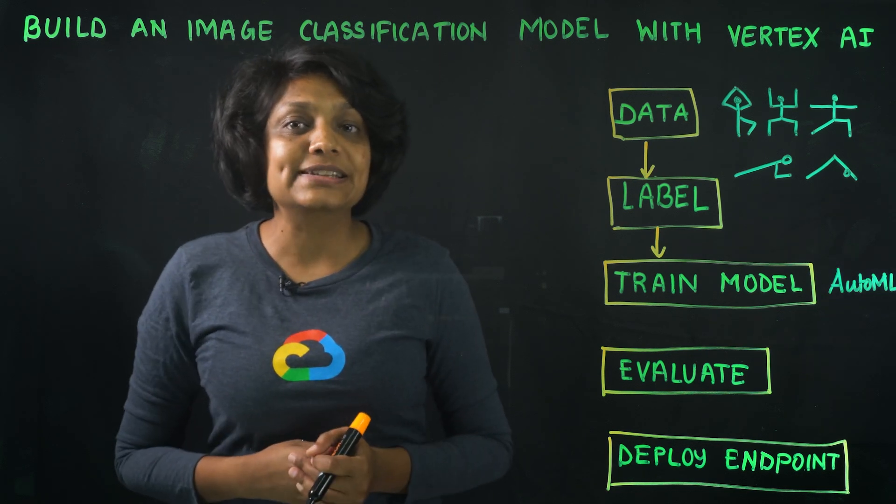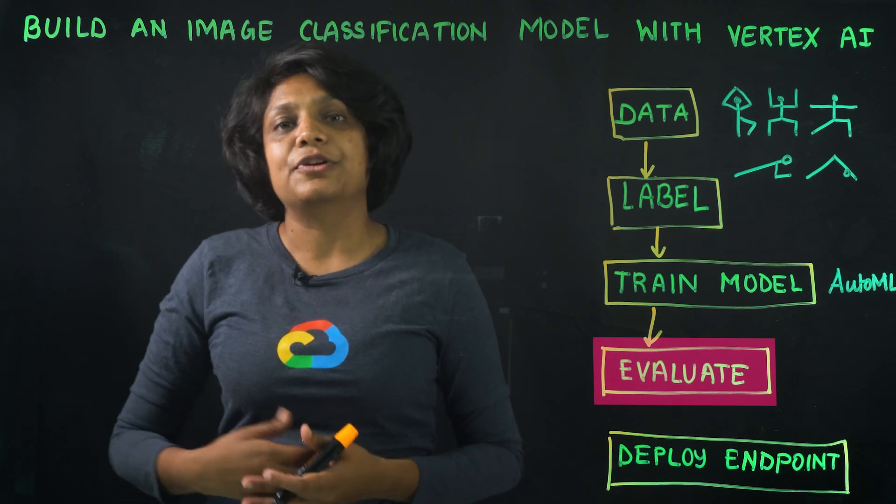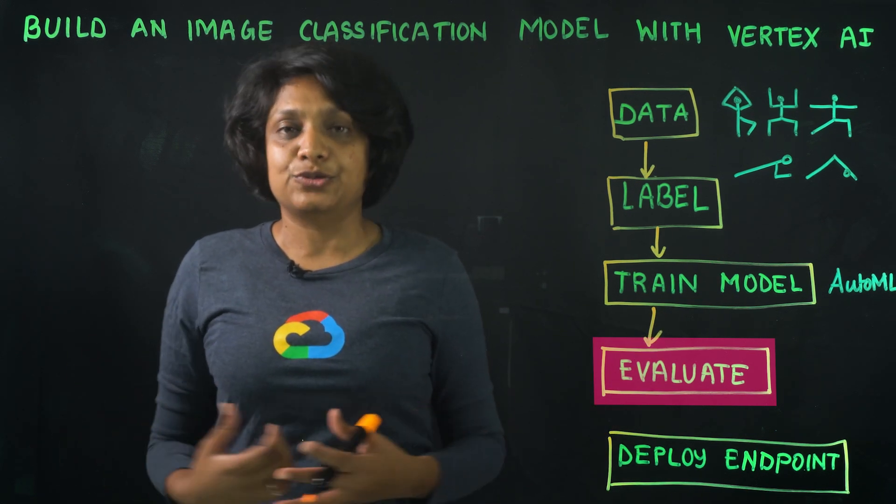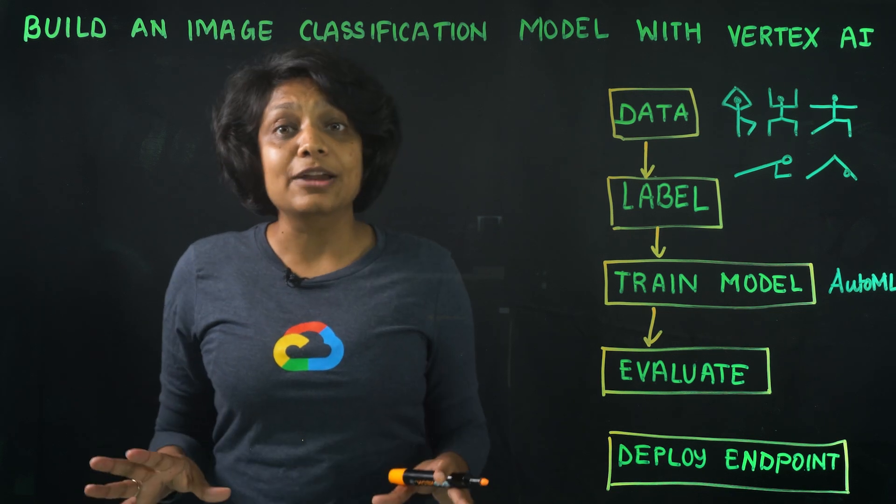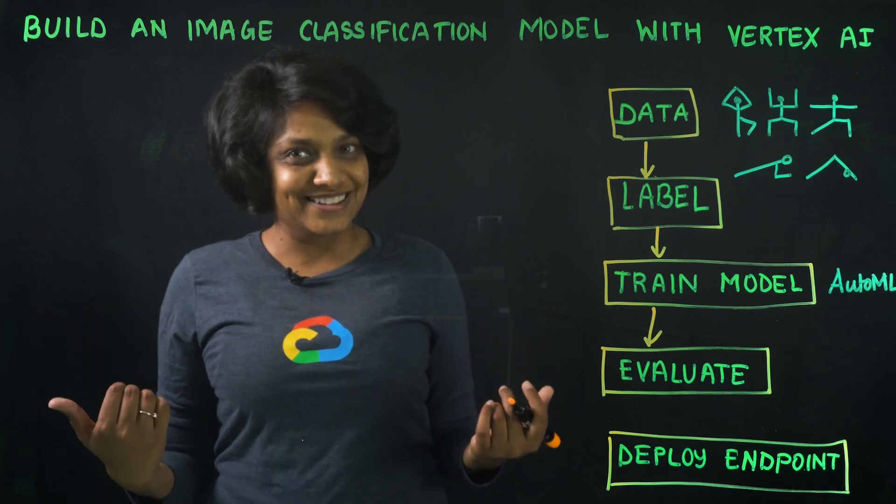Once our model is trained, we will evaluate it to understand the quality of our model and indicate areas of improvement. AutoML UI provides us with easy-to-understand charts for this that we will demystify when I show you the console.